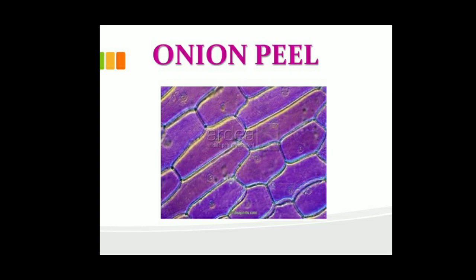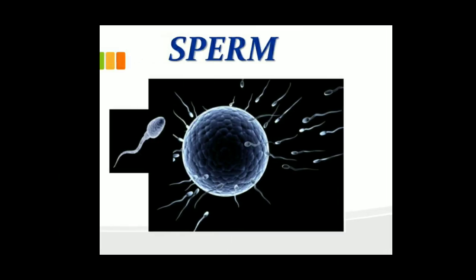You can see that the size of the cell is large — one box is considered as one cell. In the periphery, not centrally, you can see some dot-like structures — that is the nucleus. So, is onion peel a plant cell or animal cell? It is a plant cell.